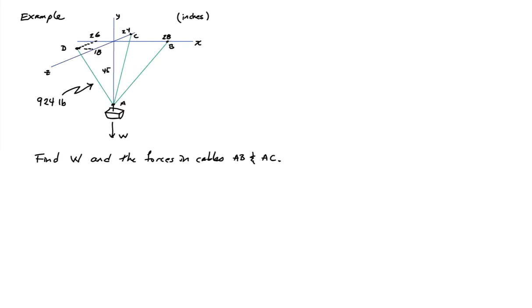The locations of all the points A, B, and C are shown as indicated. So C is located along the Z axis at a position of minus 24, etc. And I'd like to be able to figure out what the weight of the object is and also what the tensions in the cables AB and AC are. The dimensions are shown in inches here.